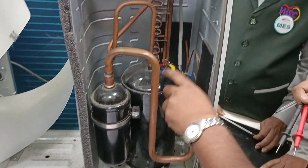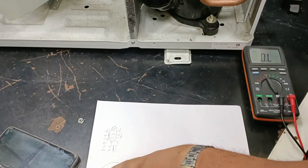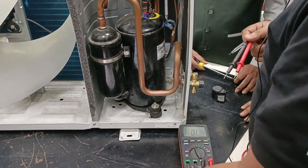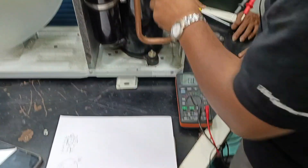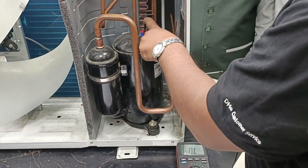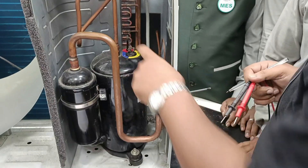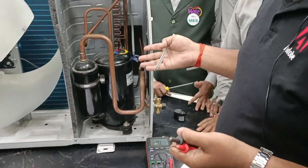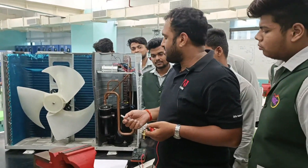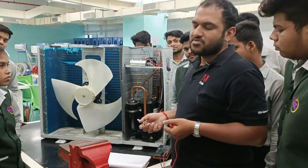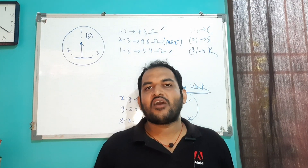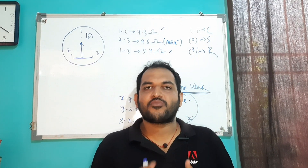You can verify this. Terminal one is your common point, terminal two is your starting point, and terminal three is your running point — and you can verify from the compressor labels. In this way, you can identify which is your C terminal, which is your S terminal, and which is your R terminal. In upcoming videos, we will discuss the wiring methods for your CSR motor as well as your PSC motor.